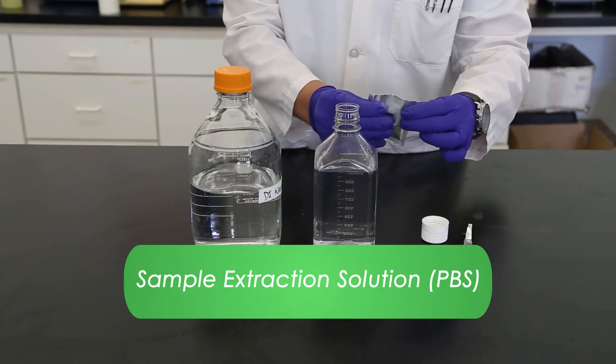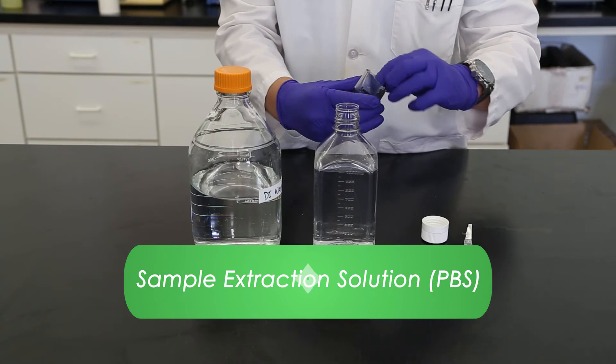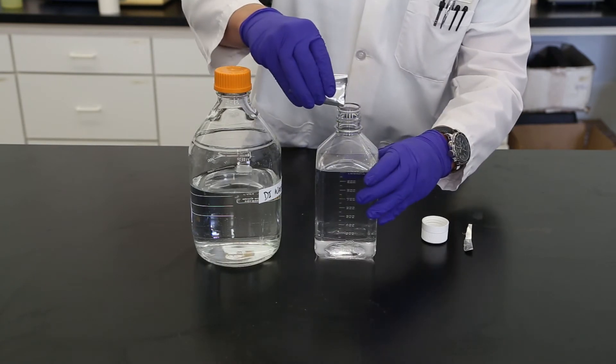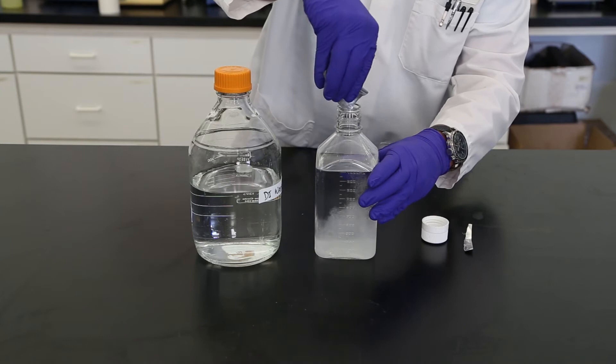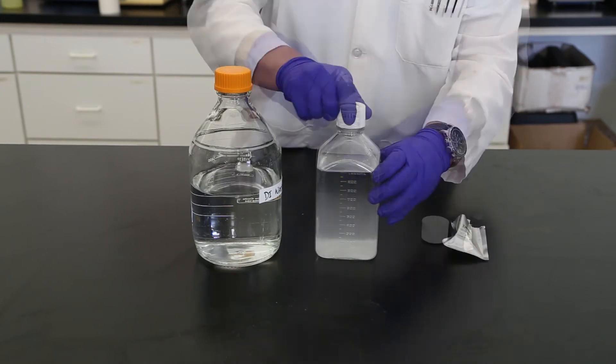Prepare the PBS sample extract dilution solutions by adding a foil pouch of sample dilution concentrate to 1 liter of distilled or deionized water. Mix.